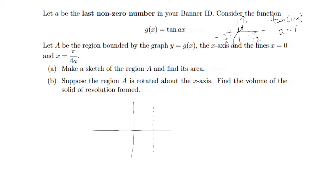So instead of π/2, that's going to be π/2a. The idea is, if I plug in π/2a, the a's are going to cancel and you're going to have π/2, which is a vertical asymptote. And then instead of π/4, you want the a's to cancel so you have π/4 left inside, so it's going to be π/4a. Zero divided by a is still 0, negative π/4a gives −1, and negative π/2a is the other asymptote. So this is going to be one period for g(x).